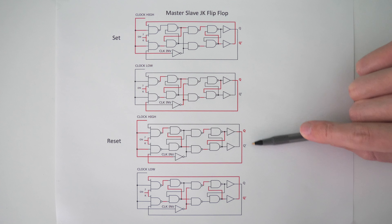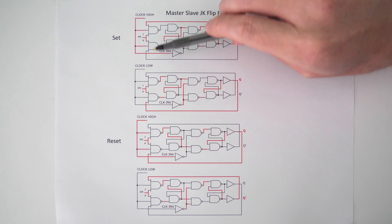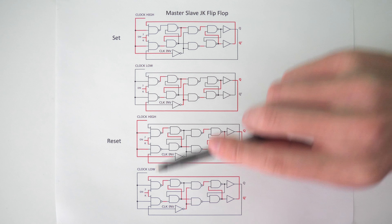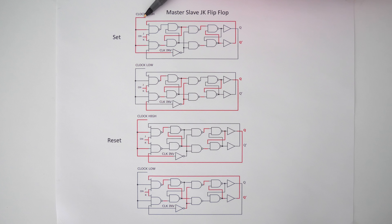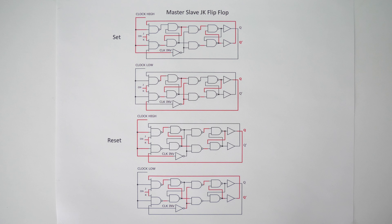These four circuit diagrams here are really going to help show how this master-slave JK flip-flop works. You'll notice that there's a set and a reset phase. During the set phase, the clock will go high and then the clock will go low. During the reset phase, the clock will go high and then the clock will go low, and then we're back up to the set phase where the clock goes high again. When the wire is red, that means it is on, and whenever the wire is black, that means it is off. Notice that the J and the K inputs for all of the circuits are on, which means the circuit is in the toggle state — every single time the clock goes from high to low, the circuit is going to change states.